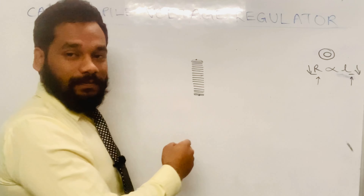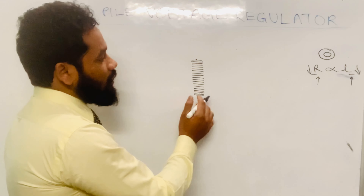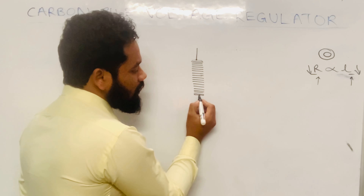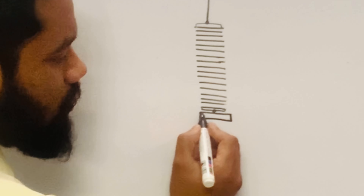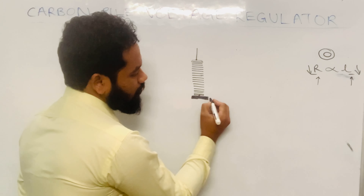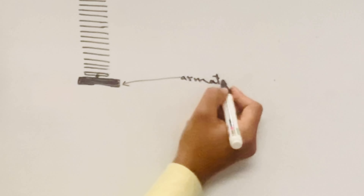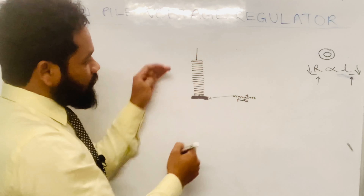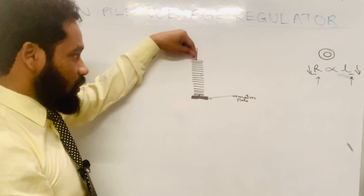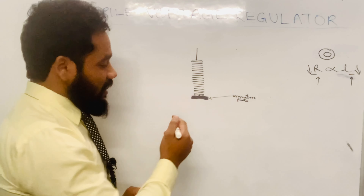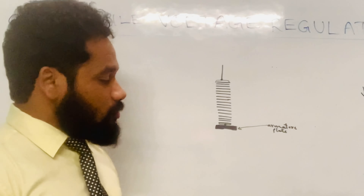In addition to this carbon pile, it should have contacts for use in a circuit. One contact is taken from the silver contact, and the other contact is connected to a plate called the armature plate. When the regulator is designed, this armature plate is pushed to compress the carbon pile. From one end of the carbon pile there is a compression screw, and from the other end is the armature plate. The armature plate is pushed by a compression spring or control spring.